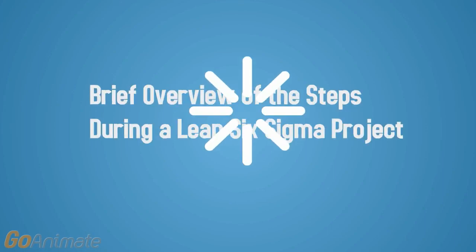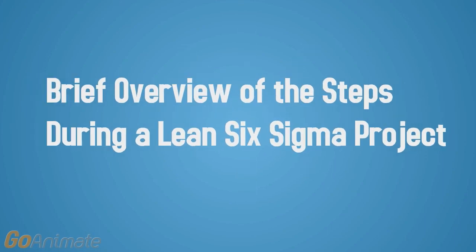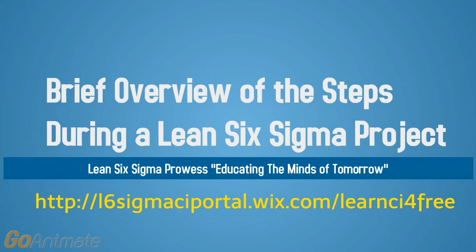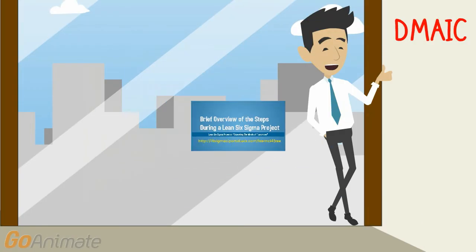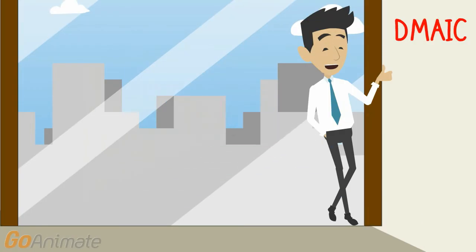Hello and welcome. In this video we will provide a brief overview of the steps taken during a Lean Six Sigma project. For full details of each phase, please visit us via our website. Lean Six Sigma uses a 5-step DMAIC process as the backbone of its continuous improvement projects.